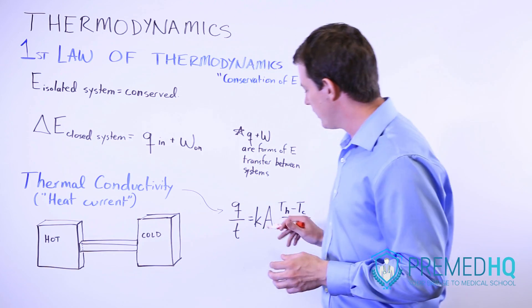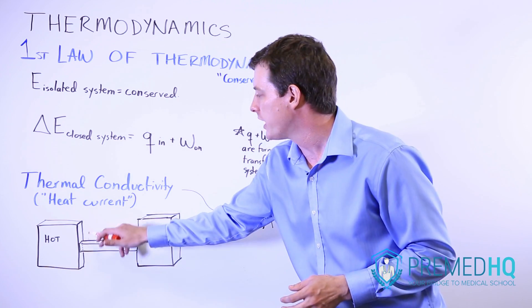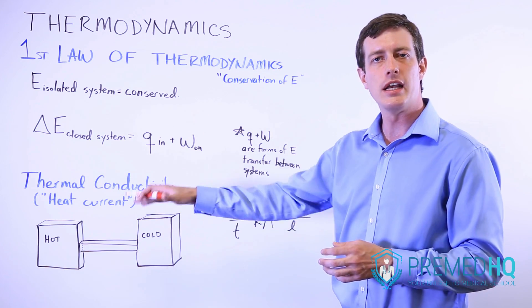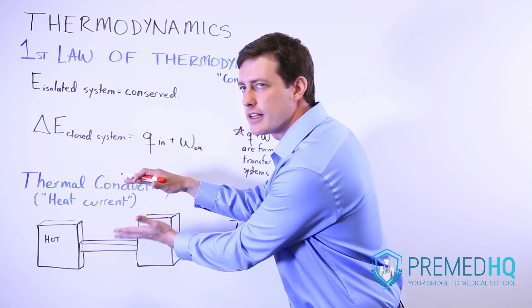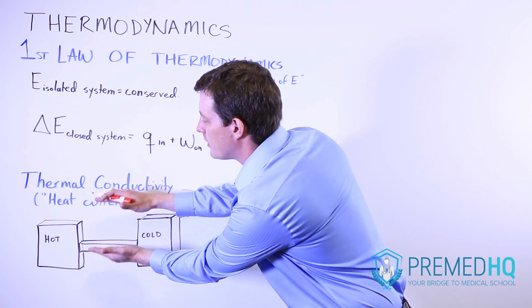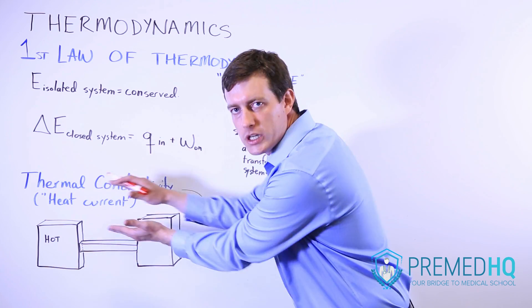And the A here is the cross-sectional area of this slab separating the two reservoirs. The larger that the slab is, it's intuitive that if you had a larger slab, it would allow for more heat to transfer through.